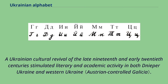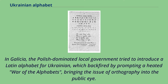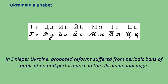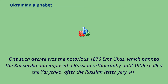A Ukrainian cultural revival of the late 19th and early 20th century stimulated literary and academic activity in both Dnieper Ukraine and western Ukraine in Galicia. The Polish-dominated local government tried to introduce a Latin alphabet for Ukrainian, which backfired by prompting a heated war of the alphabets, bringing the issue of orthography into the public eye. The Cyrillic script was favored, but conservative Ukrainian cultural factions opposed publications promoting a pure Ukrainian orthography. In Dnieper Ukraine, proposed reforms suffered from periodic bans on publication and performance in the Ukrainian language.